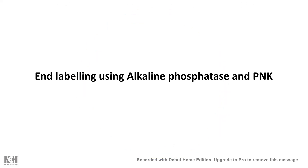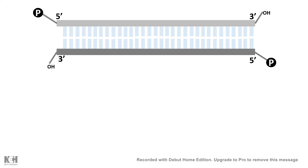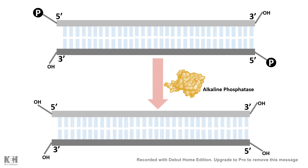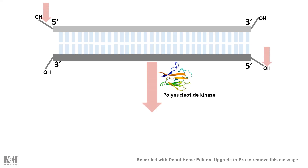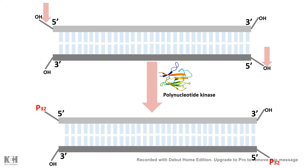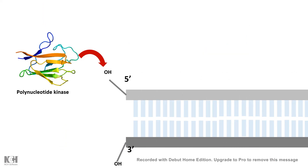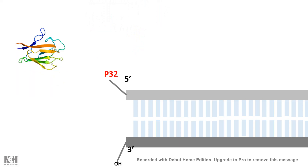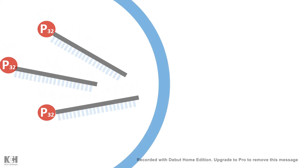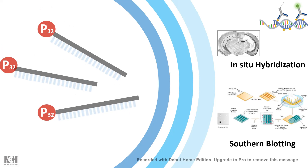Alkaline phosphatase and polynucleotide kinase can also be used for end labeling DNA with radioactive probes. You first use alkaline phosphatase to dephosphorylate the 5' ends, then rephosphorylate with polynucleotide kinase using radio-labeled nucleotides, which incorporate the label into the DNA ends. Radioactive ATP is used, labeling the DNA ends with radioactive P32. These strategies are often used to make labeled probes for RNA in situ hybridization or probes for Southern or Northern blotting.